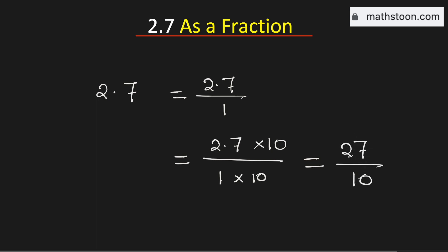Now we know that 27 over 10 cannot be simplified further. Therefore 2.7 as a fraction is equal to 27 over 10, and this is our final answer.